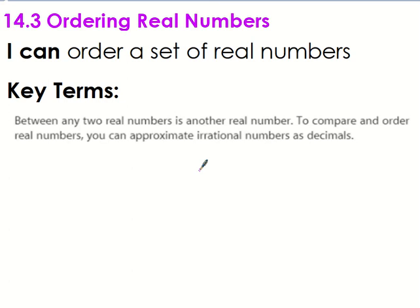14.3 is ordering real numbers. Real numbers are just all the numbers we've dealt with — rational and irrational. This is our last section for Module 14. The learning goal is that I can order a set of real numbers.